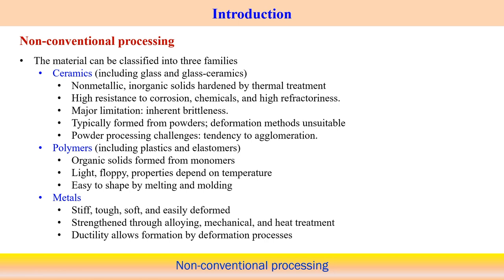This module will cover colloidal processing and casting, coating and tape casting processes, and finally polymer and ceramic coatings. These are the subtopics of this non-conventional processing module. Before looking into different manufacturing technologies, we will look at the typical characteristics of different types of materials. These materials are classified into three different families: ceramics, polymers, and metals.